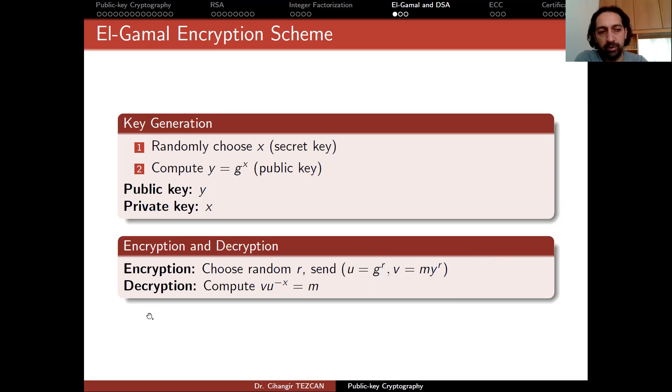So what you do next is, as the person who wants to decrypt, you perform U to the power minus X. And since X is known to you, which is the secret key, you can compute the inverse of U with respect to this value. So you just multiply V times U to the minus X, again in the group, and you will get the message back.